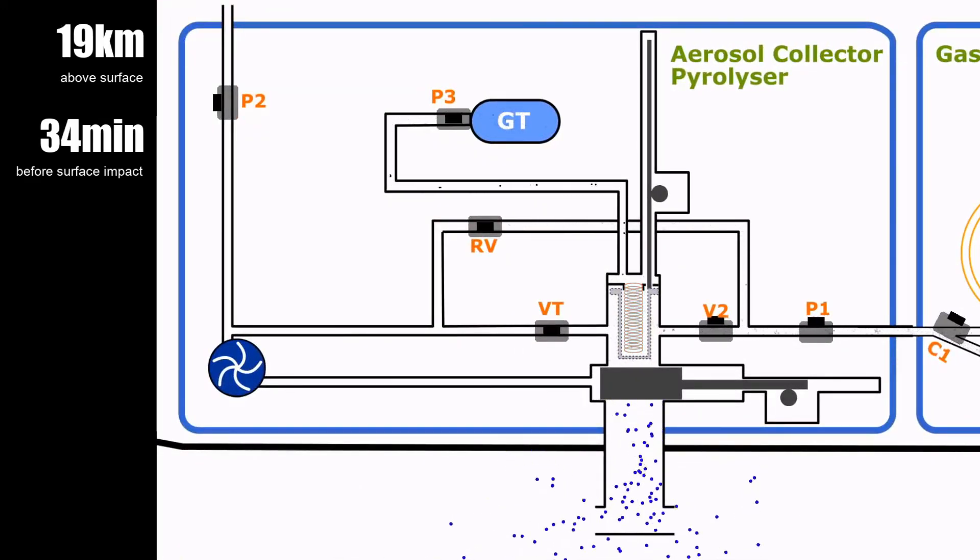While the GCMS was analyzing the first gas product, the ACP was being prepared for the second sampling of Titan's atmosphere at low altitude. This is an important step because comparing the chemical composition at both altitudes will help us build a model of the chemical reactions that are happening in the atmosphere.